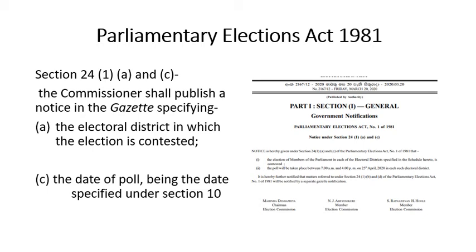Under Section 24-1, the National Election Commission first publishes two matters: the electoral district in which the election is contested, and the date of poll. The other two matters — candidate names and polling station — may be published later.